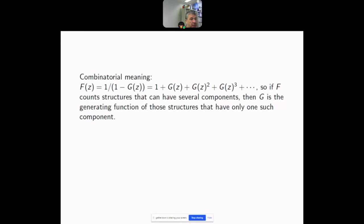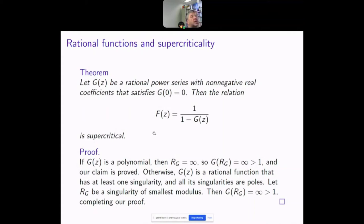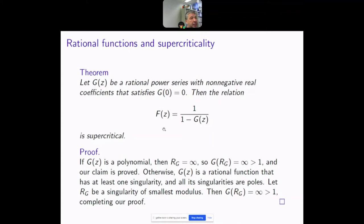If the relation between f and g is supercritical, the components have a smaller exponential order than the composite structures. The punchline: for rational power series, if f is rational then g is rational and vice versa, and this relation will always be supercritical. Therefore, to prove that something is not rational, it's enough to prove that the corresponding relation is not supercritical — that is my method.